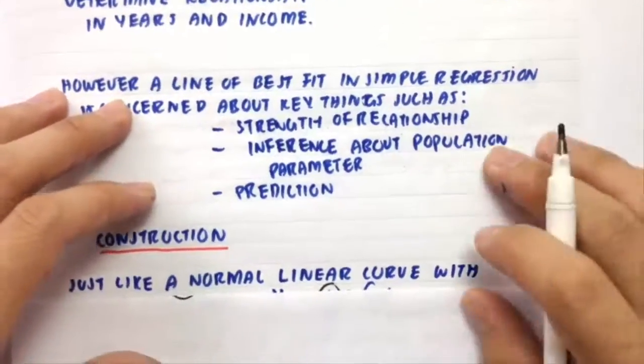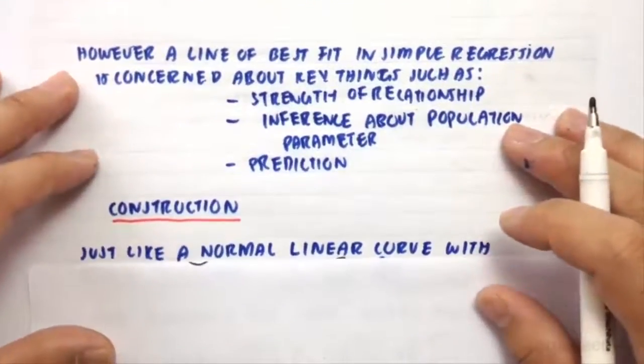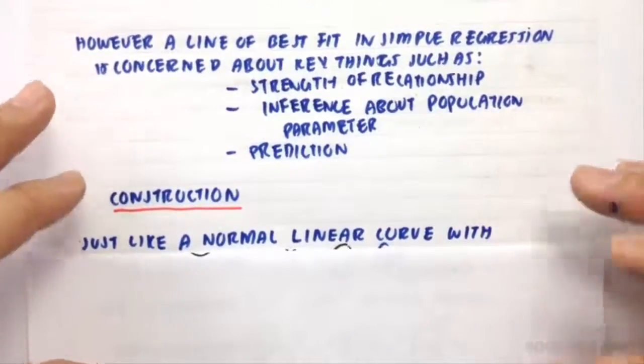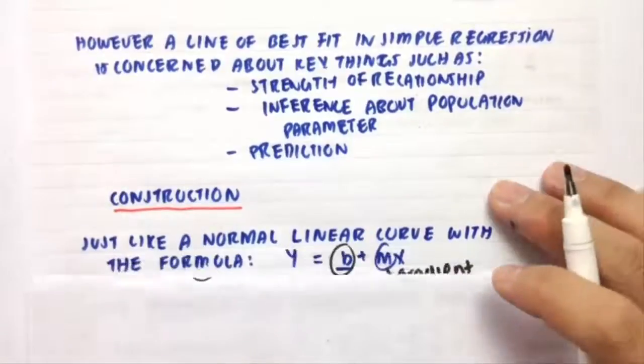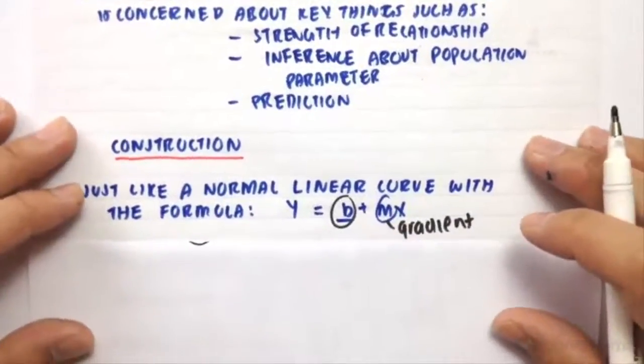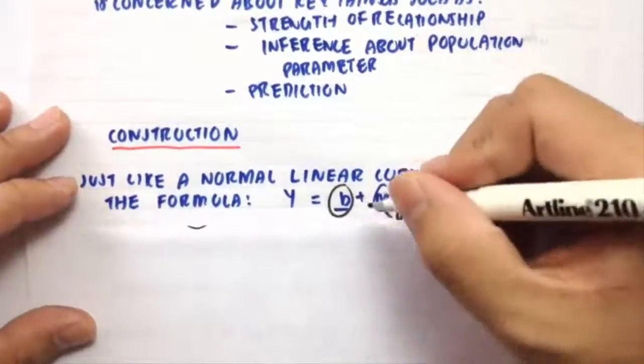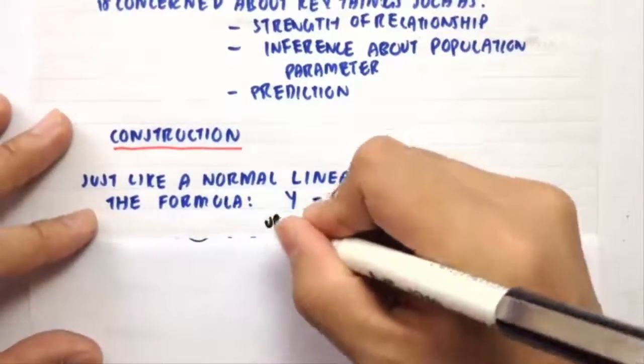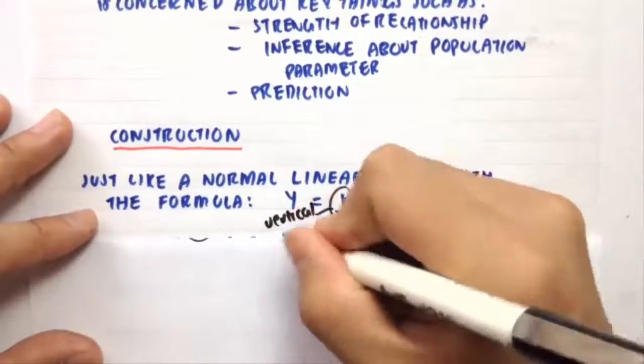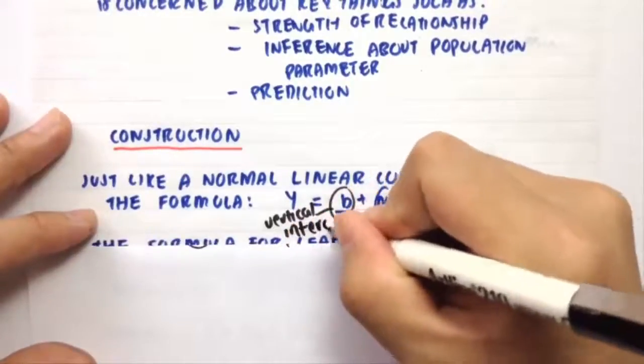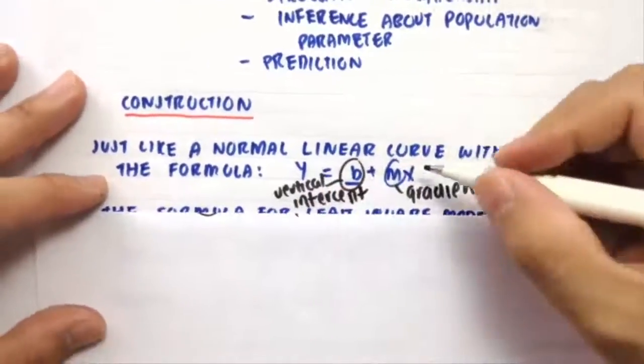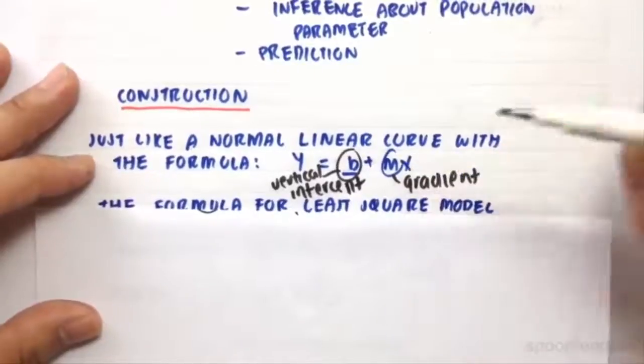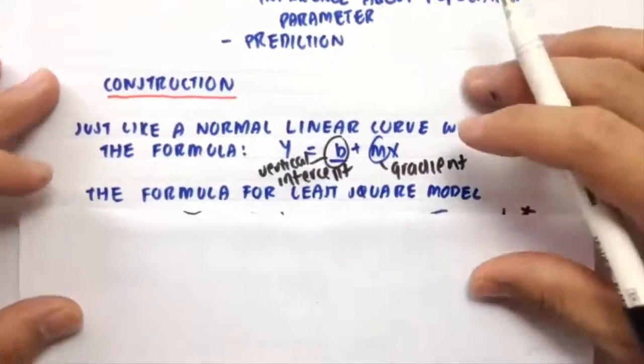So when you construct the line of best fit or the regression model, it's a little bit different. So just like a normal linear curve with the formula y equals mx plus b, if you move the b to this side, that will equal the vertical intercept. Plus mx, m if you remember, is the gradient or the rise over the run.